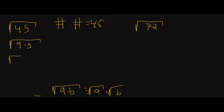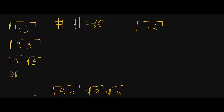Now we can break this up as the square root of 9 times the square root of 5 using our conjecture. The A here is the 9, the B is the 5, and we break it up as square root of A times square root of B. Well, what is the square root of 9? That's just 3. And then we just have the square root of 5. And this is our simplest radical — we were able to reduce this down to simplest form.